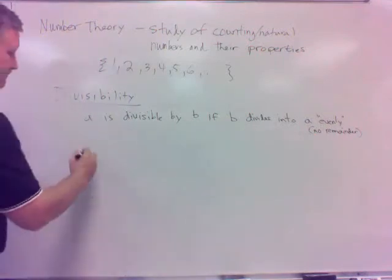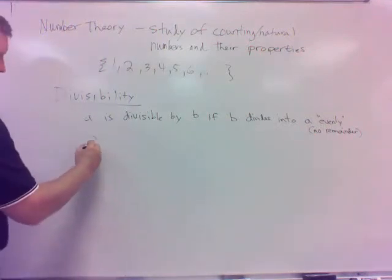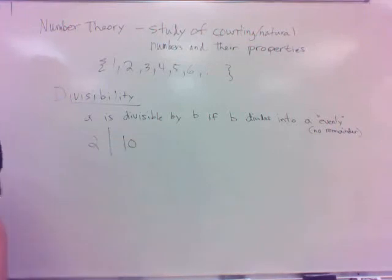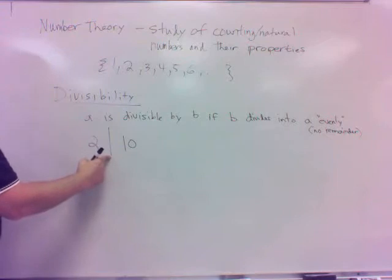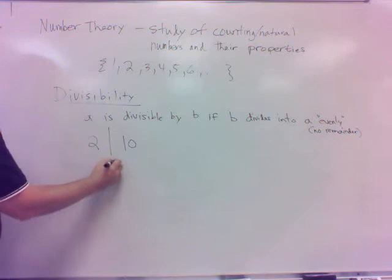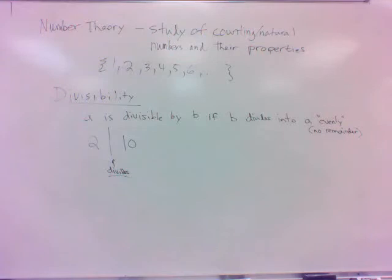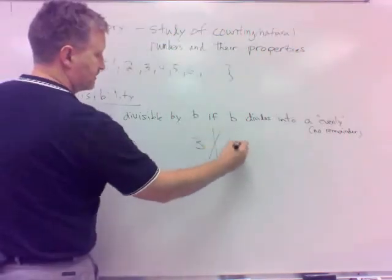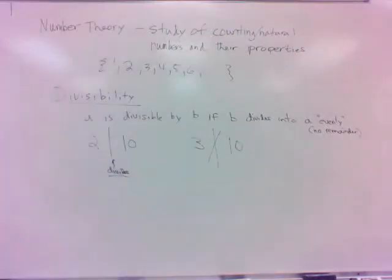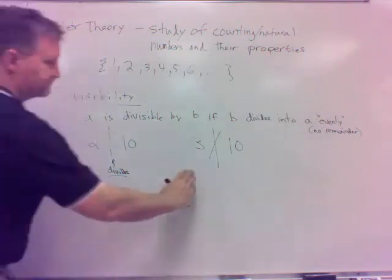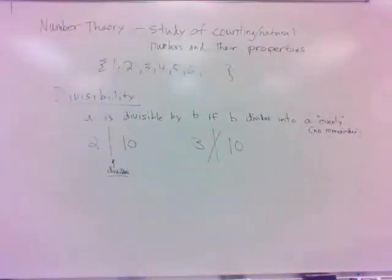There is a little bit of notation here for divisible. This line right here in number theory means 'divides' — so '2 divides 10' means 2 goes into 10 evenly. Then 3 does not divide 10. That's the notation that is sometimes associated there.